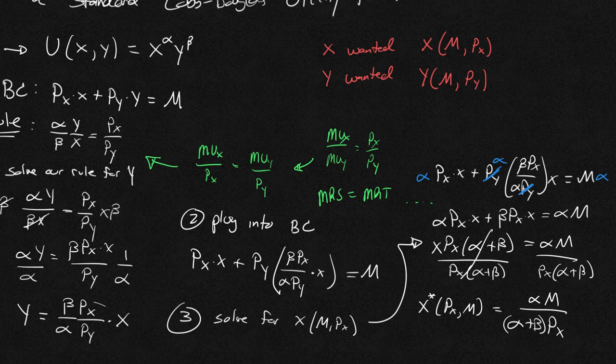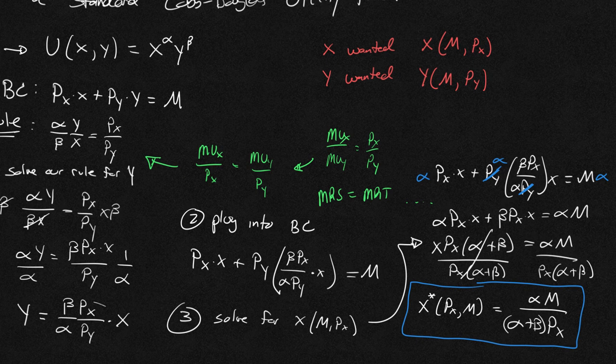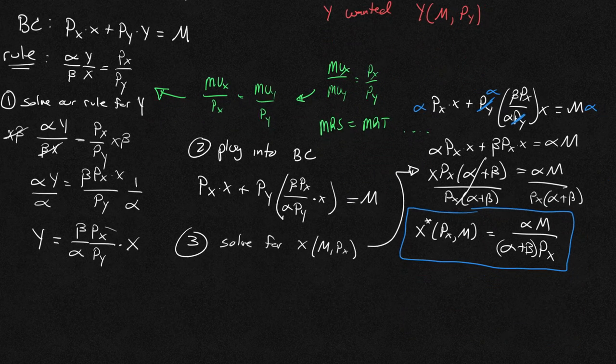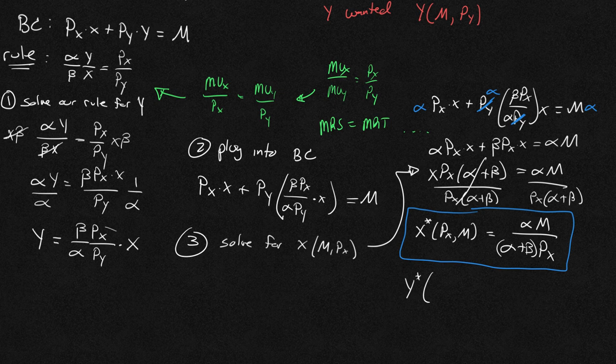So this right here will always be, for a standard Cobb-Douglas, your x star, meaning the optimal level of x that someone will choose. I'm just going to write out what the y, my demand for y, what that function would be, where it's going to be py instead and m. And it's going to be beta m over alpha plus beta times py.